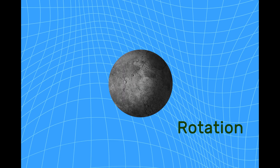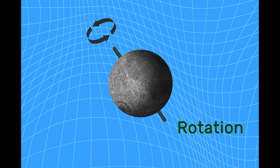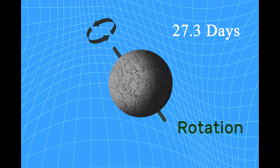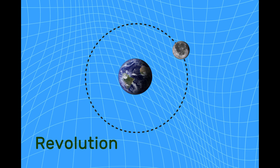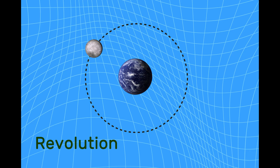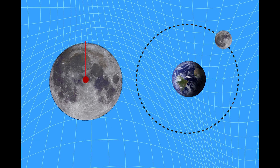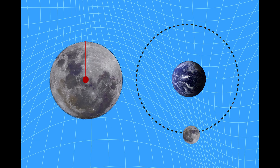To understand this, we need to know two important motions of the moon: its rotation and its revolution. Rotation means the moon is spinning on its own axis, just like the Earth does — it takes about 27.3 days to complete one full spin. Revolution means the moon is moving around Earth in an orbit, and it also takes about 27.3 days to complete one full circle around our planet.